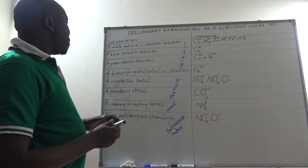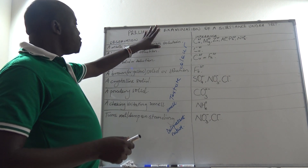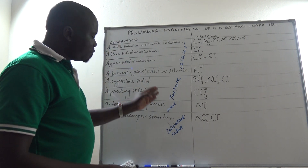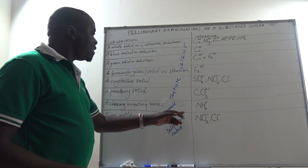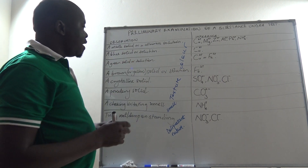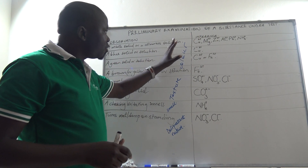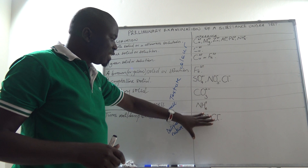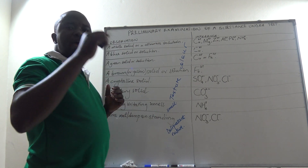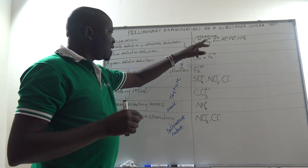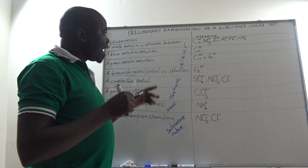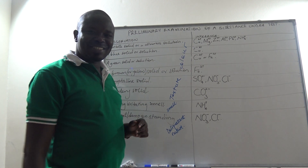This is what we look at in preliminary examination — you may meet any one of these. Take note of the color, texture, smell, and deliquescent nature of a substance, and relate it to the ions likely to be present. But do not take it as definite proof or confirmation of any ion present unless you heat it or use reagents to find out the specific ion. This is TEPDocs Education — thanks for watching.